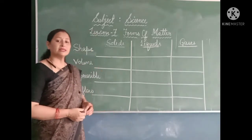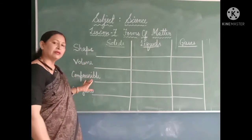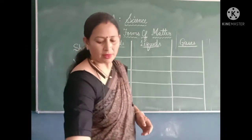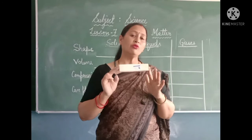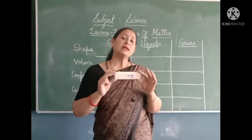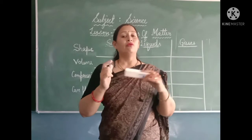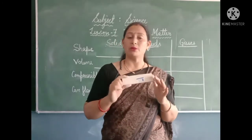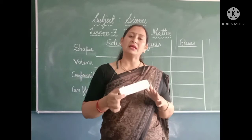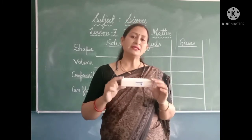We are going to discuss about solids, liquids, and gases on the basis of their properties: shape, volume, compressible or not, and can flow or not. This is a wooden block and it is an example of solid. It has a fixed shape — you can see it is a rectangular block. If I keep it anywhere, whether in a bowl or in a box, its shape remains the same. It means it has a fixed shape.